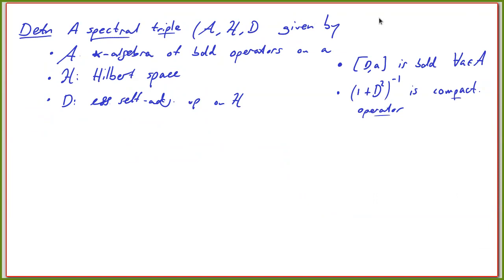Here is the definition I ended with yesterday: the notion of a spectral triple, which is a triple of data. A is a star algebra — just an algebra meaning you can multiply and add, and the star means there is some kind of involution, an anti-linear conjugation you can apply to the elements in the algebra satisfying a suitable property for the ordering. They act as bounded operators on a Hilbert space H.